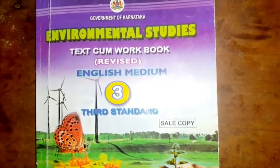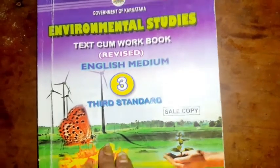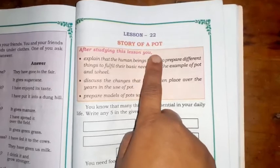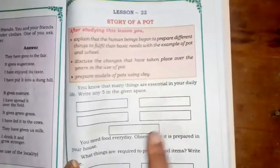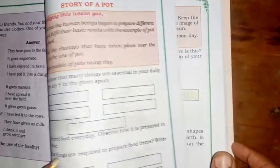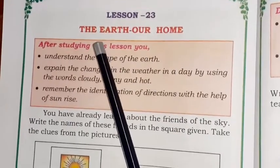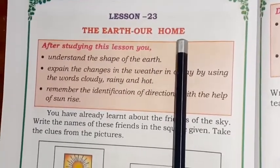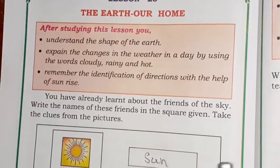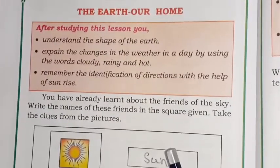Good morning children, welcome back to AVS class. Take out your AVS textbook. Today we'll see the new lesson. We are going to skip the story of a pot — that lesson is not so important. We'll go for the next lesson, that is Lesson 23: The Earth, Our Home.